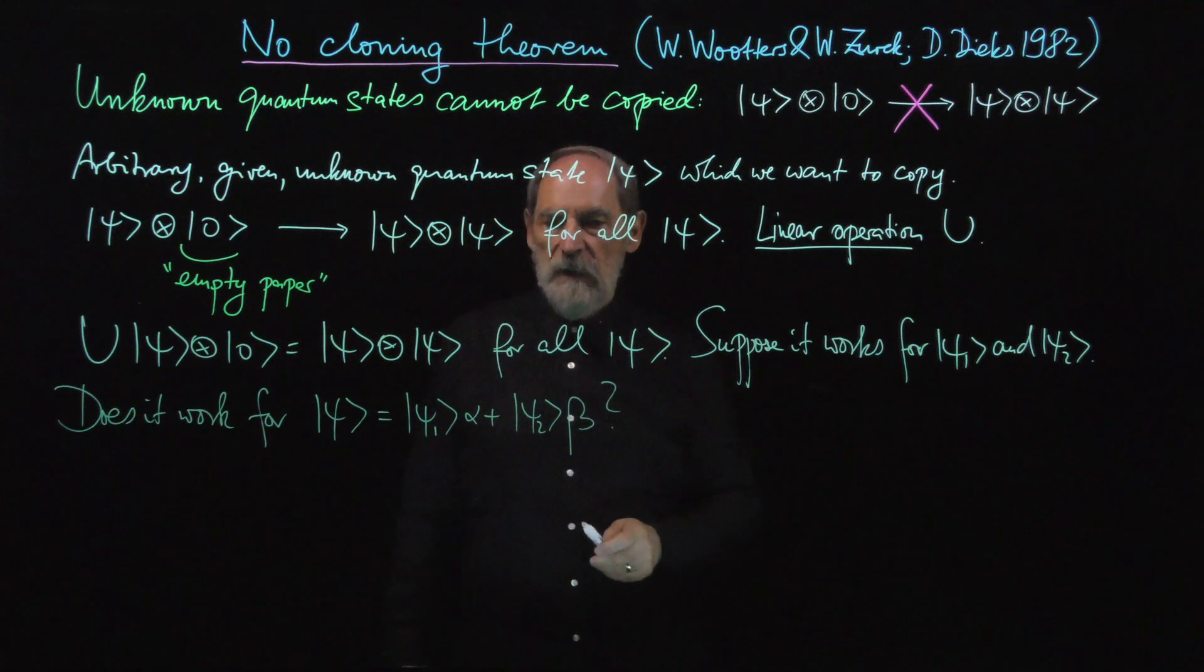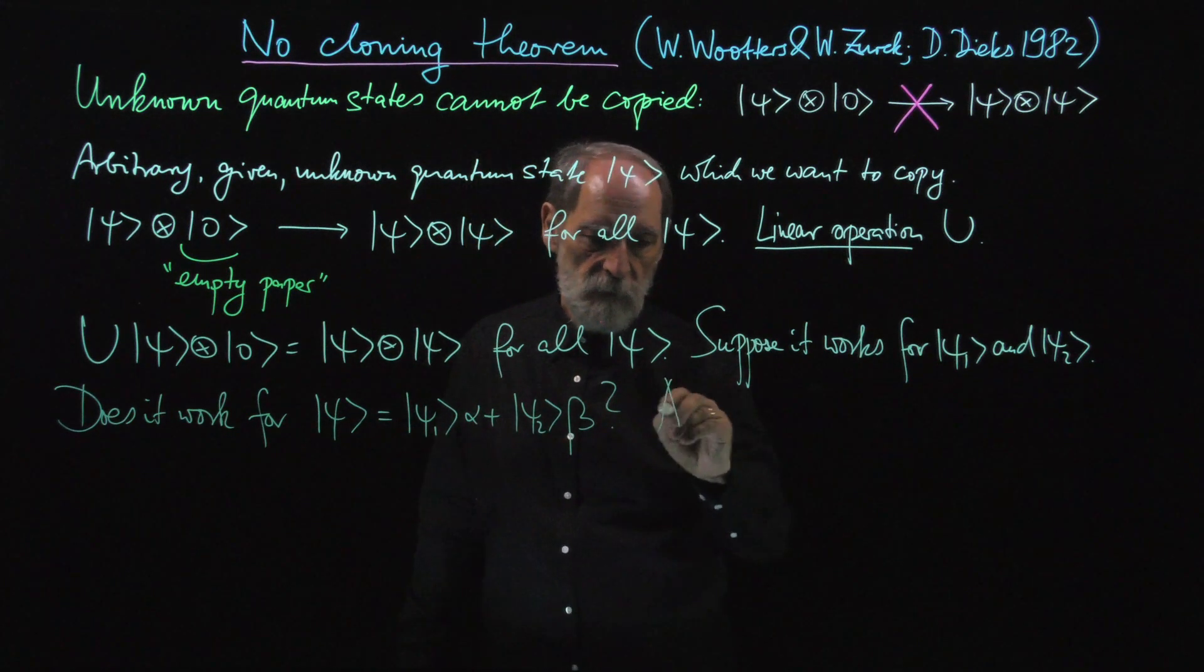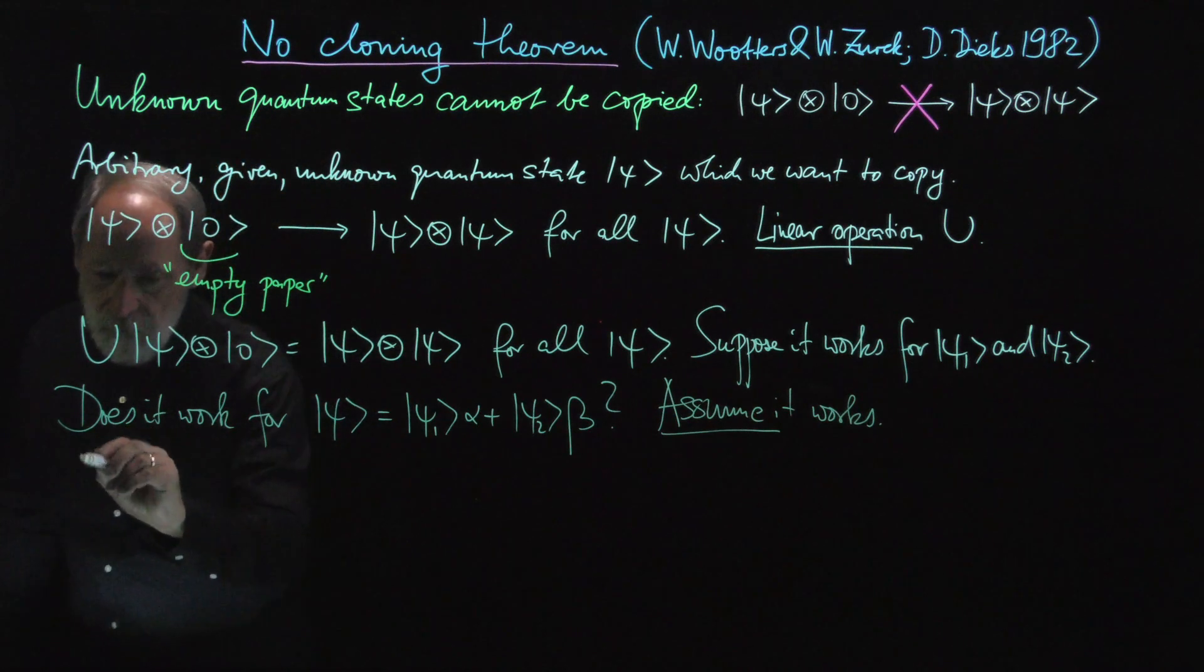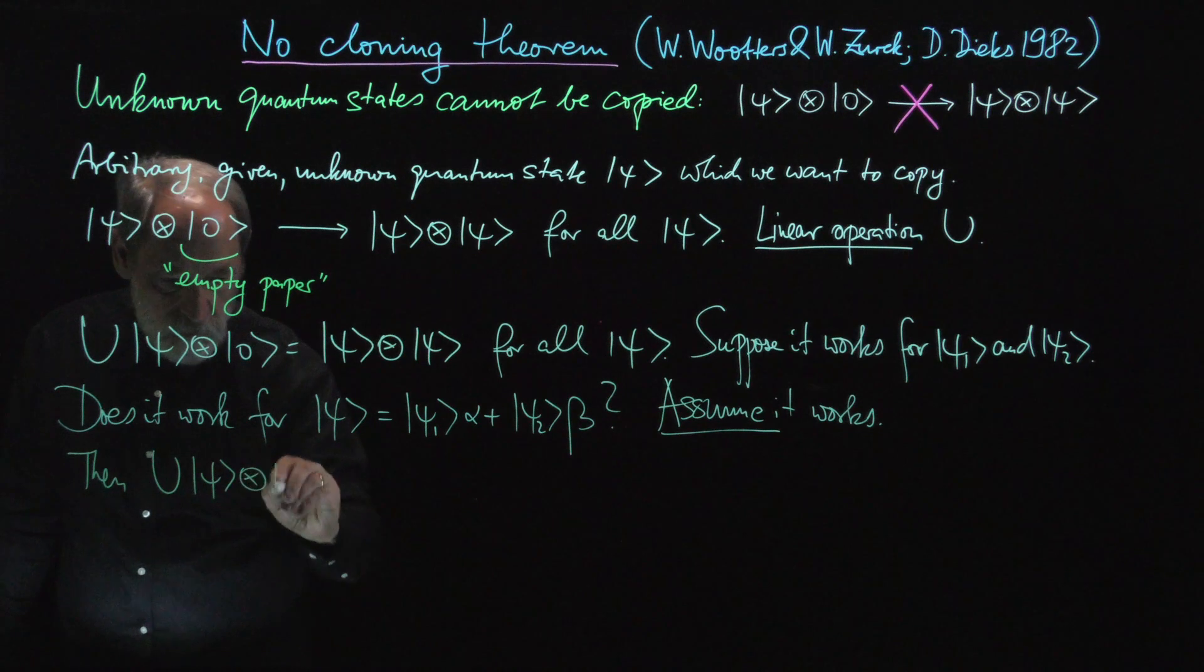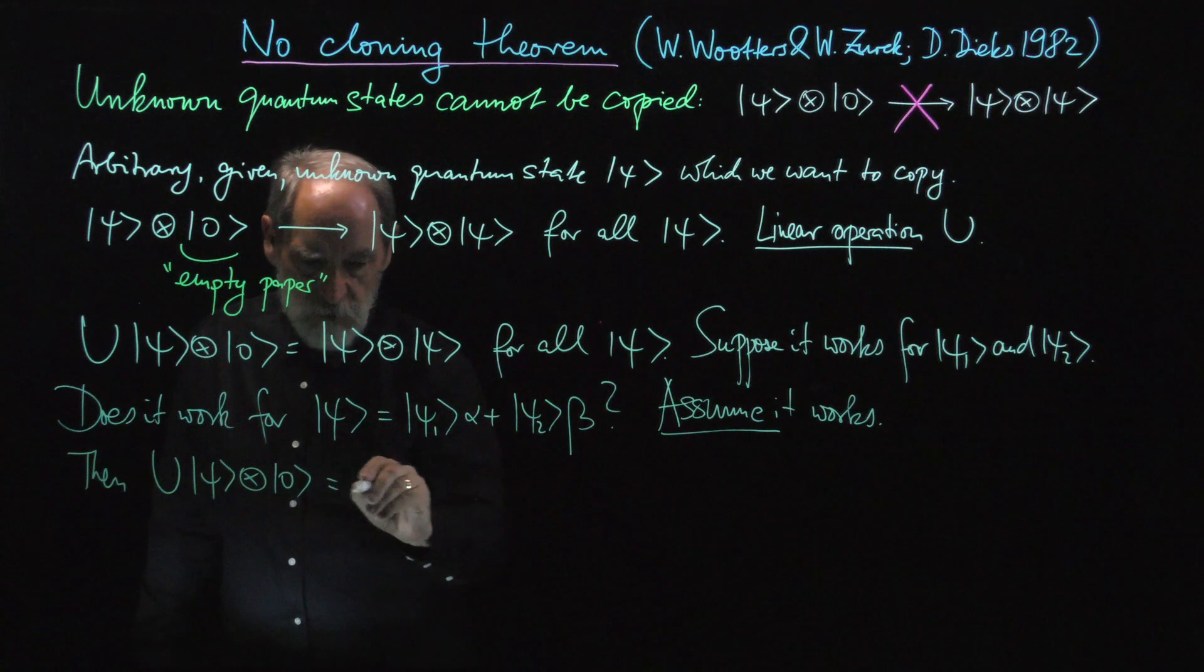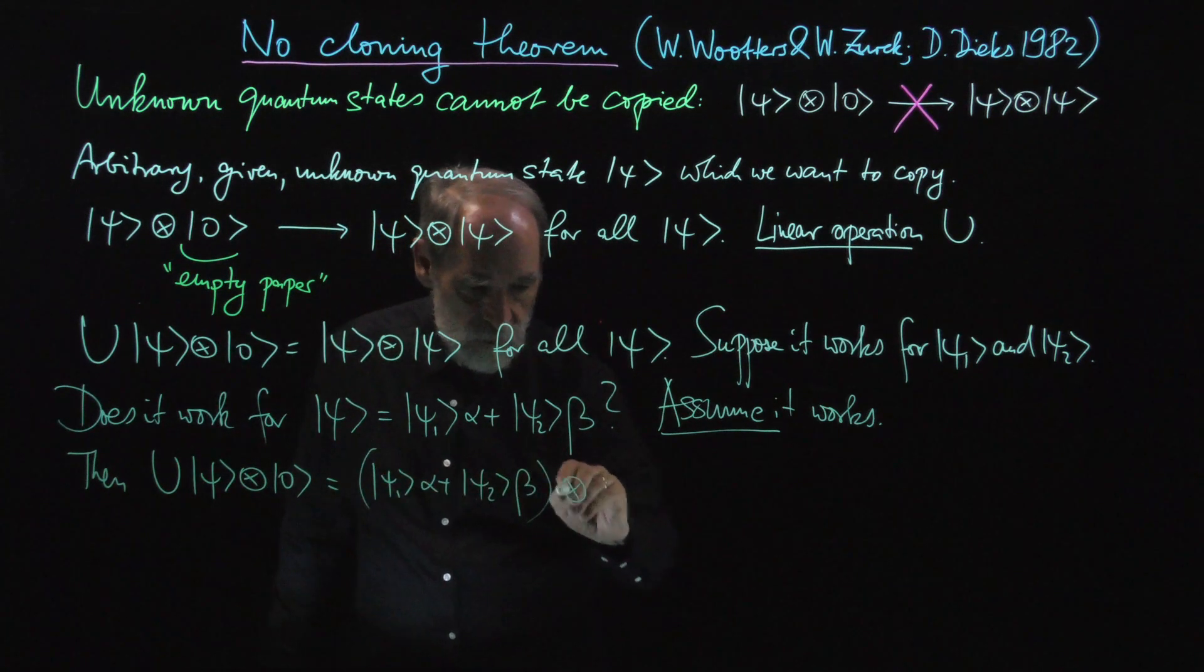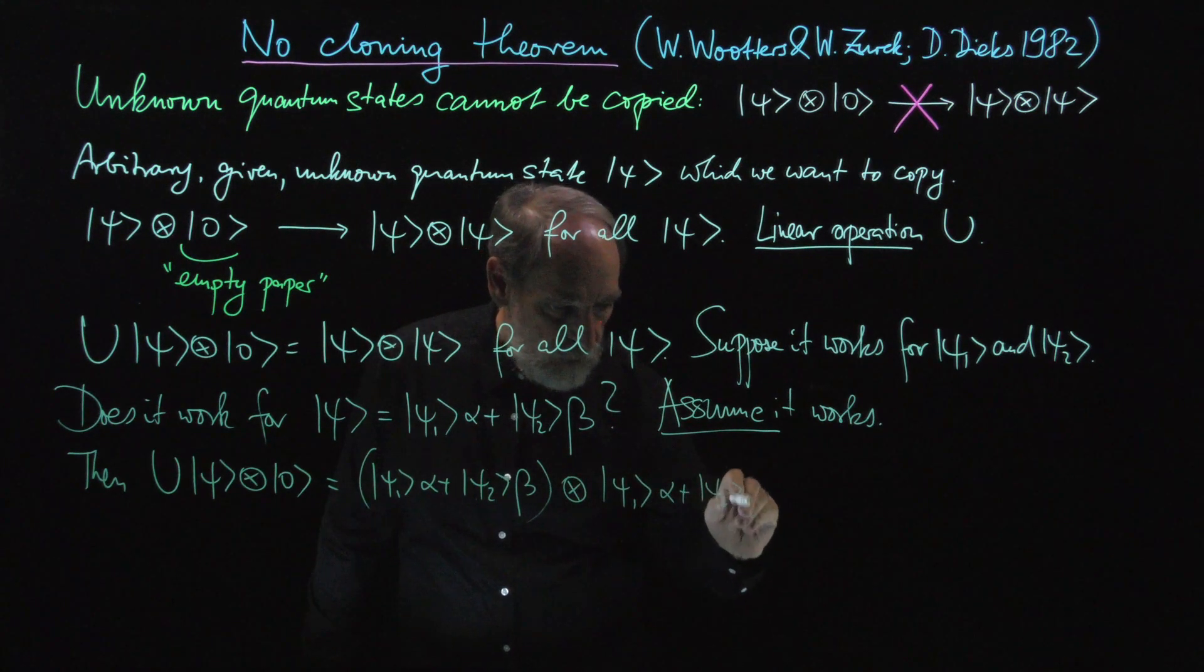Well, let's see. Let's assume it works. U applied to this psi tensor zero gives us this psi tensor this psi. So it gives us psi one alpha plus psi two beta tensor psi one alpha plus psi two beta.